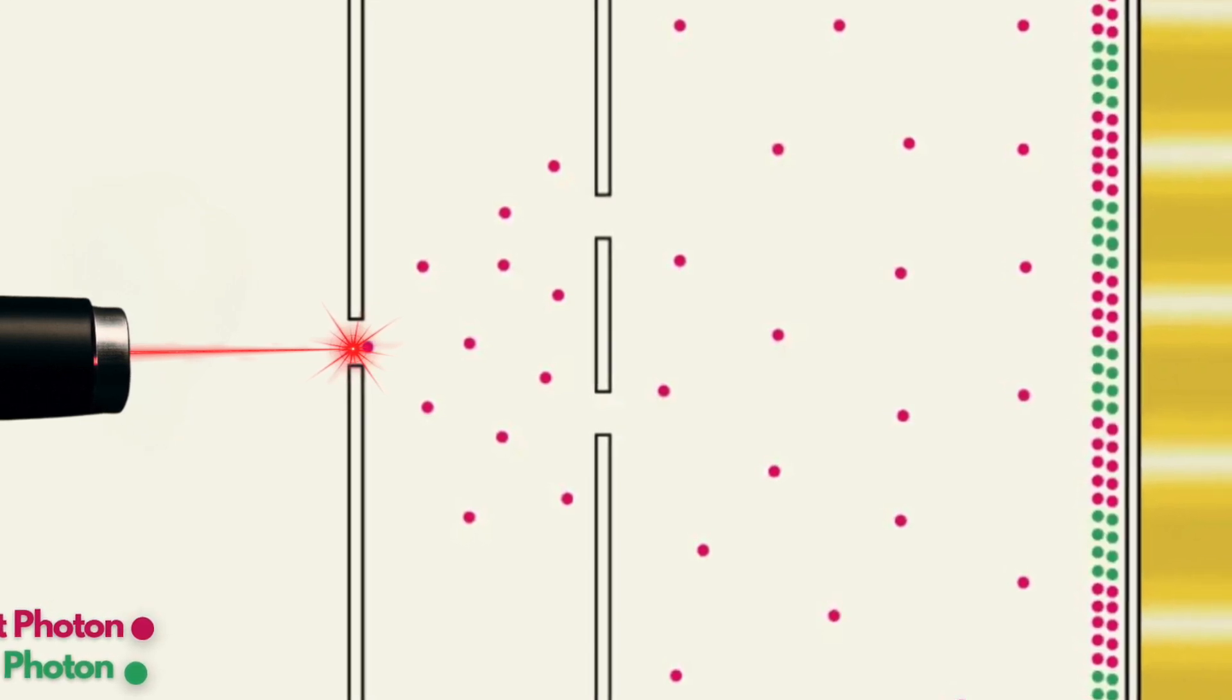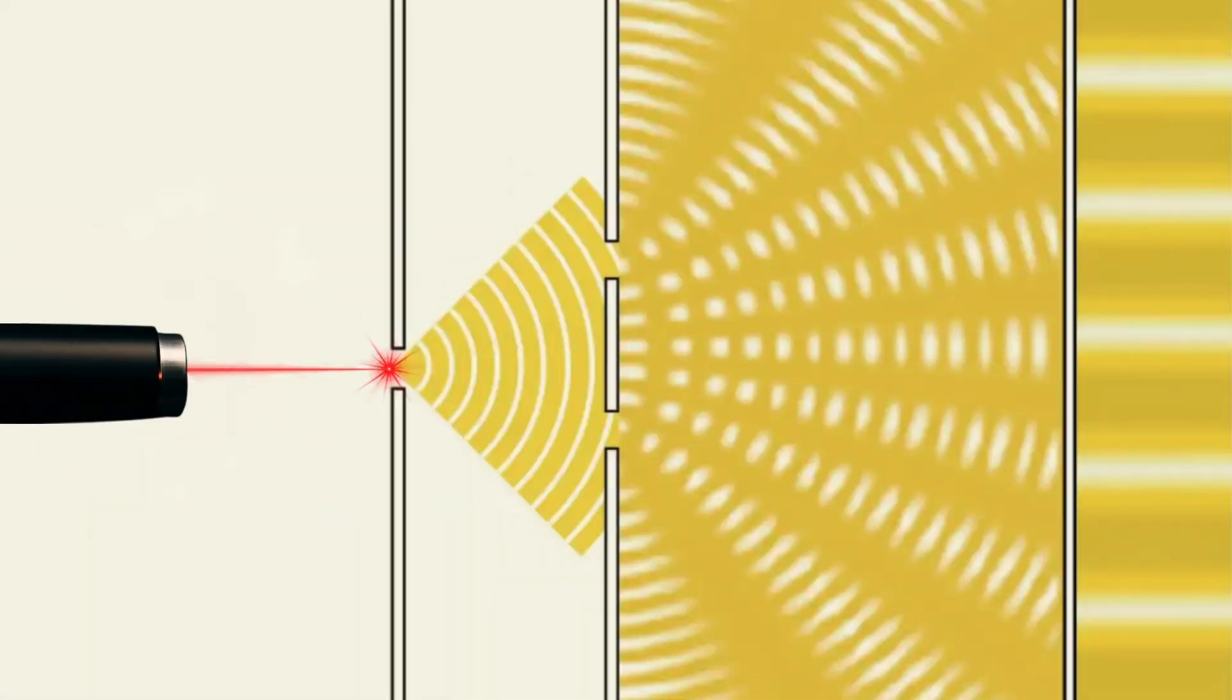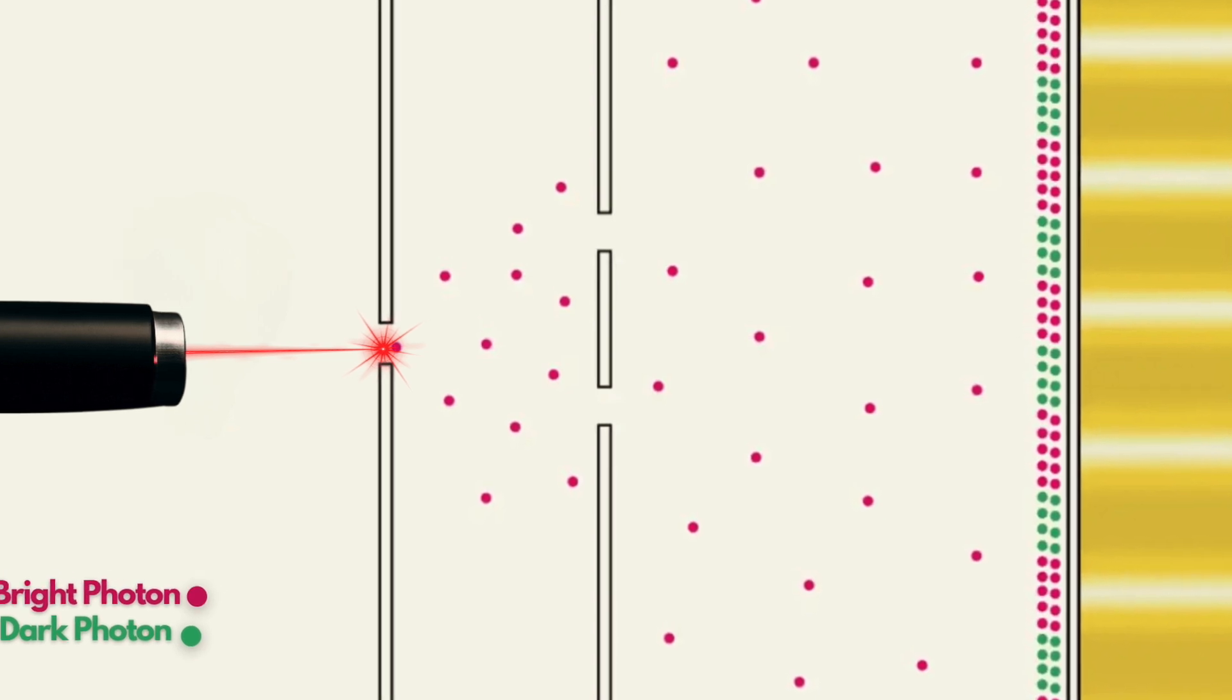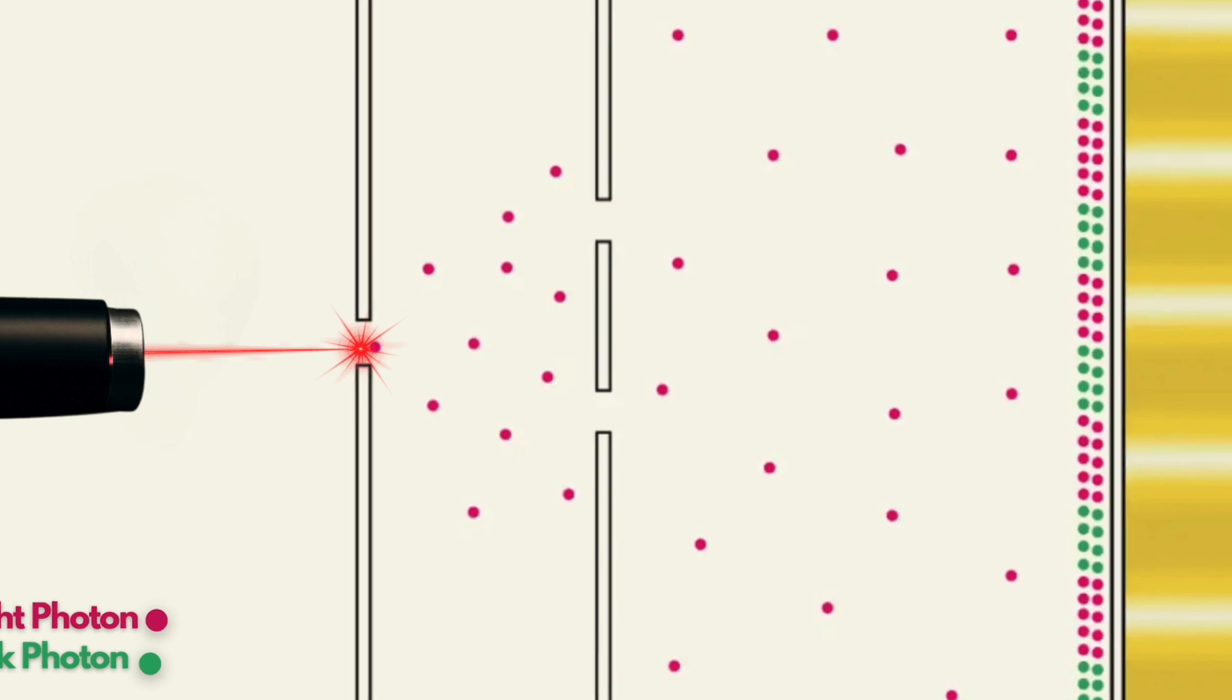With this new approach, there's no longer a need to rely solely on wave behavior to explain the classical interference pattern. The alternating bright and dark bands can now be interpreted as the result of collective quantum superpositions formed by particles, specifically photons. In other words, according to this perspective, we may not need wave dynamics at all to account for what we observe.